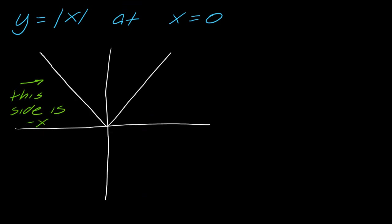So once again, let's see if that makes sense. So this side of the absolute value, this side is the equation negative x. So this side is x, this side is negative x.